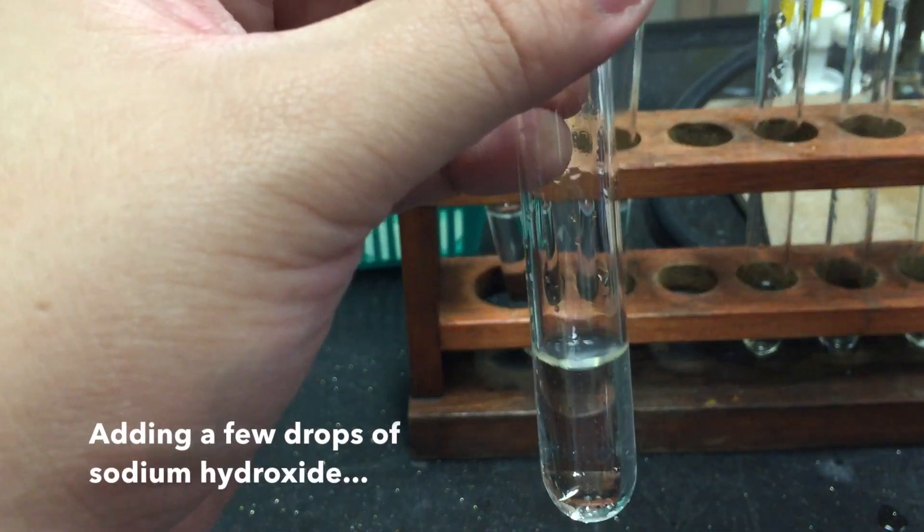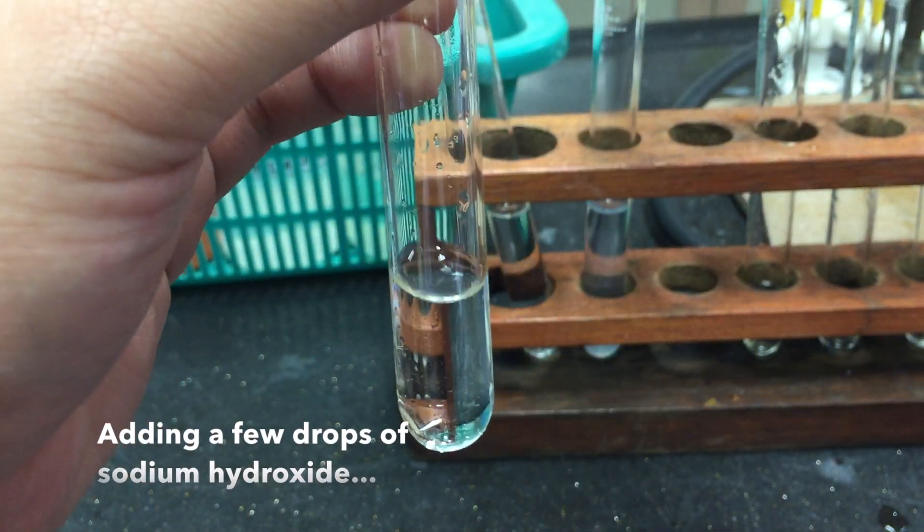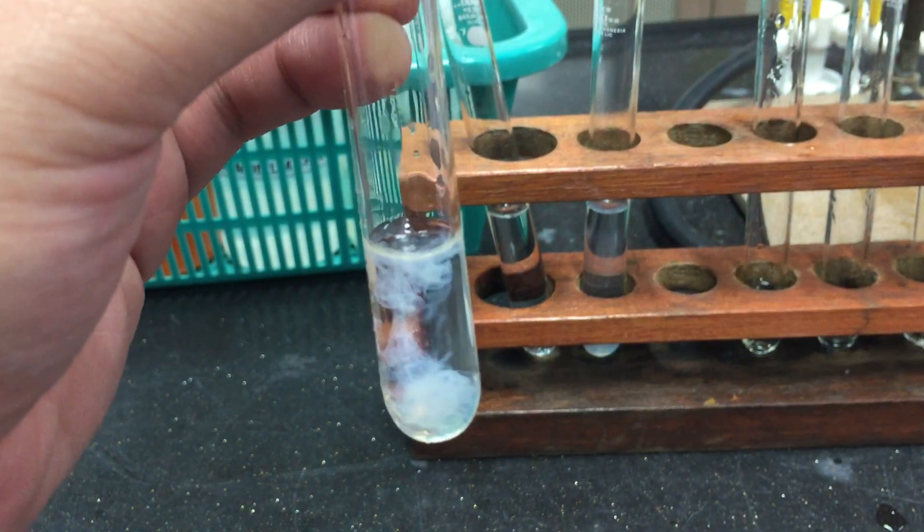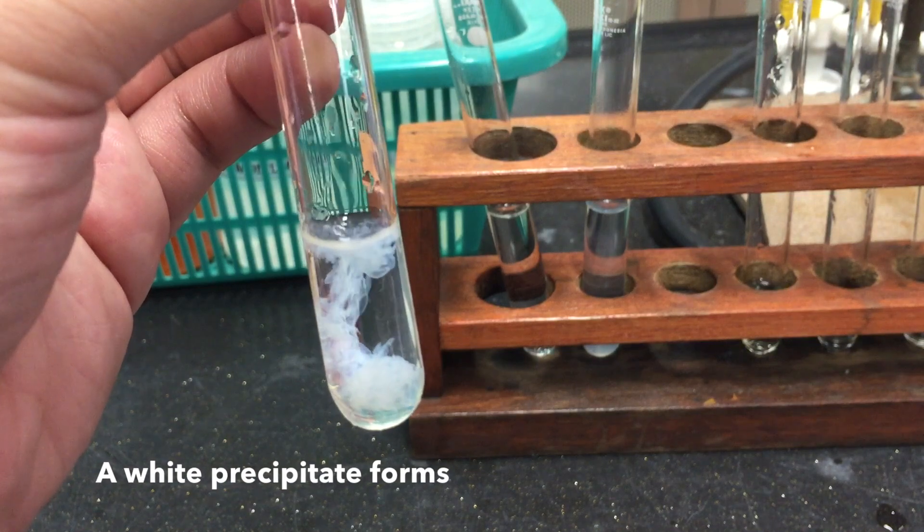To a small sample of your solution, add a few drops of sodium hydroxide. Notice that a white precipitate forms.